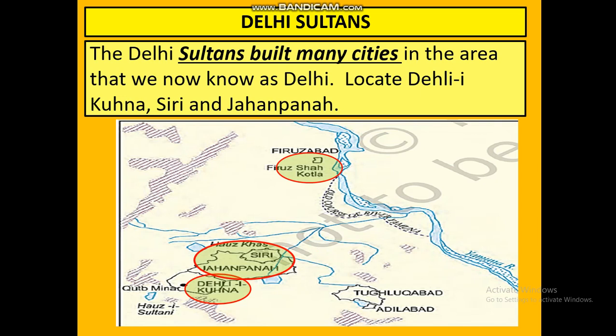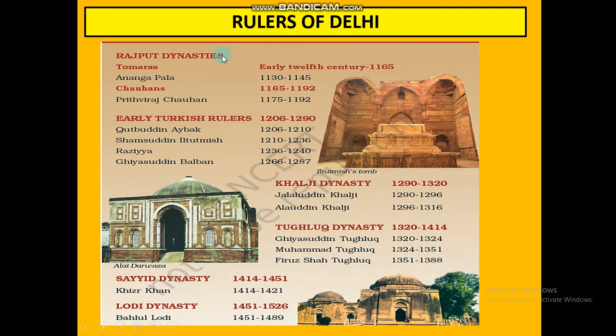The Delhi Sultans also built many cities in and around Delhi. Nowadays Delhi is a very big place, but it was not this big during the Delhi Sultanate period. Before the Delhi Sultans came, Delhi was not famous — kingdoms like Magadh, Ujjain, Banaras, and Sindh were much more famous. When these Delhi Sultans made their capital at Delhi, the popularity of Delhi started rising. They developed areas such as Siri Fort, Firozshah Kotla, and Jahanpanah.